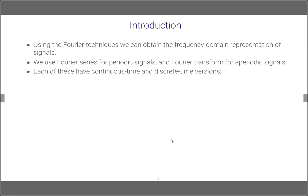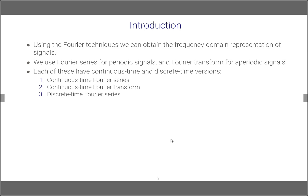Each of these have continuous time and discrete time versions. So in this context we have continuous time Fourier series, continuous time Fourier transform, discrete time Fourier series, and discrete time Fourier transform.